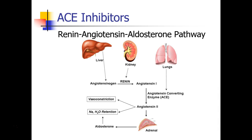Angiotensin-2 serves two functions in the body: it causes vasoconstriction and also retention of sodium and water. Angiotensin-2 also goes to the adrenal gland, where it stimulates the release of aldosterone, and aldosterone, like angiotensin-2, also stimulates sodium and water retention.